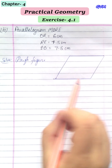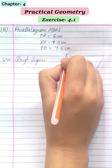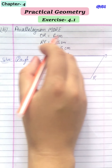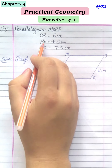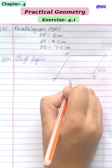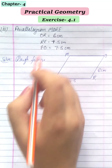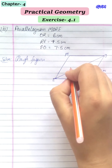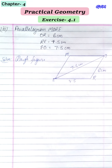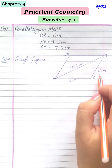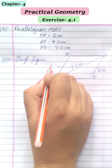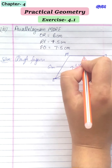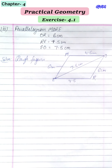Here is the rough figure for parallelogram MORE. OR = 6 cm, RE = 4.5 cm, and EO = 7.5 cm — EO is the diagonal. Since OR = 6 cm, the opposite side is also 6 cm, and since RE = 4.5 cm, the opposite side is also 4.5 cm.